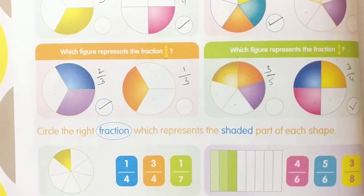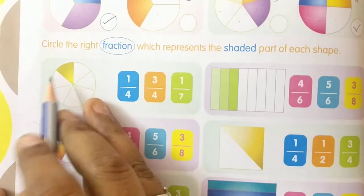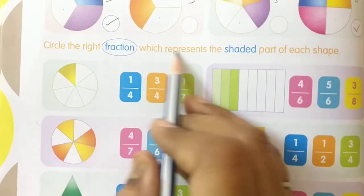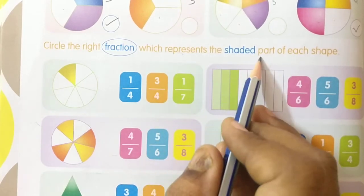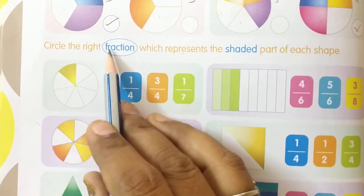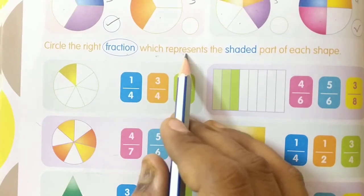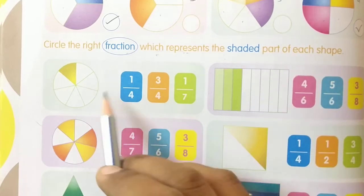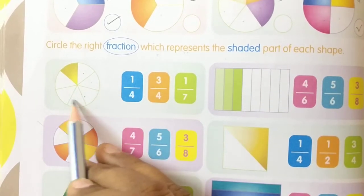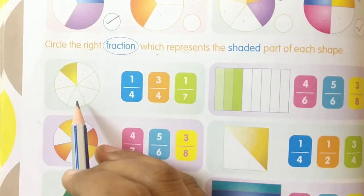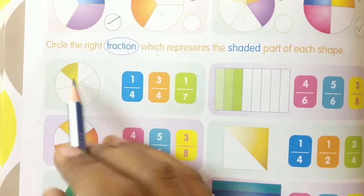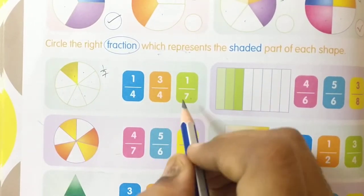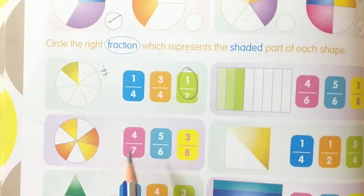Do you understand children? Now come to the next question: circle the right fraction which represents the shaded part of each shape. First shape: 1, 2, 3, 4, 5, 6, 7 — total 7 parts, 1 part is shaded. So the answer is 1 by 7. By observing the given options, we got 1 by 7 here. So circle that number.